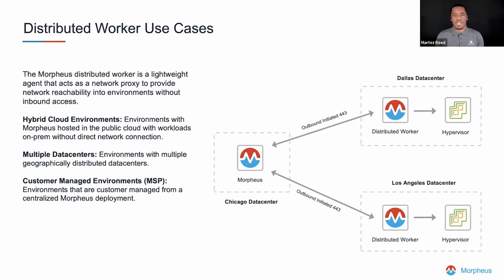In this example, we have a Morpheus instance located in a Chicago data center having connectivity to two different data centers — Dallas and Los Angeles — and then being able to interact with a VMware hypervisor via the distributed workers located in each of those environments. This provides a distributed architecture for the Morpheus platform and enables executing those operations local to that environment without the need for a VPN connection.